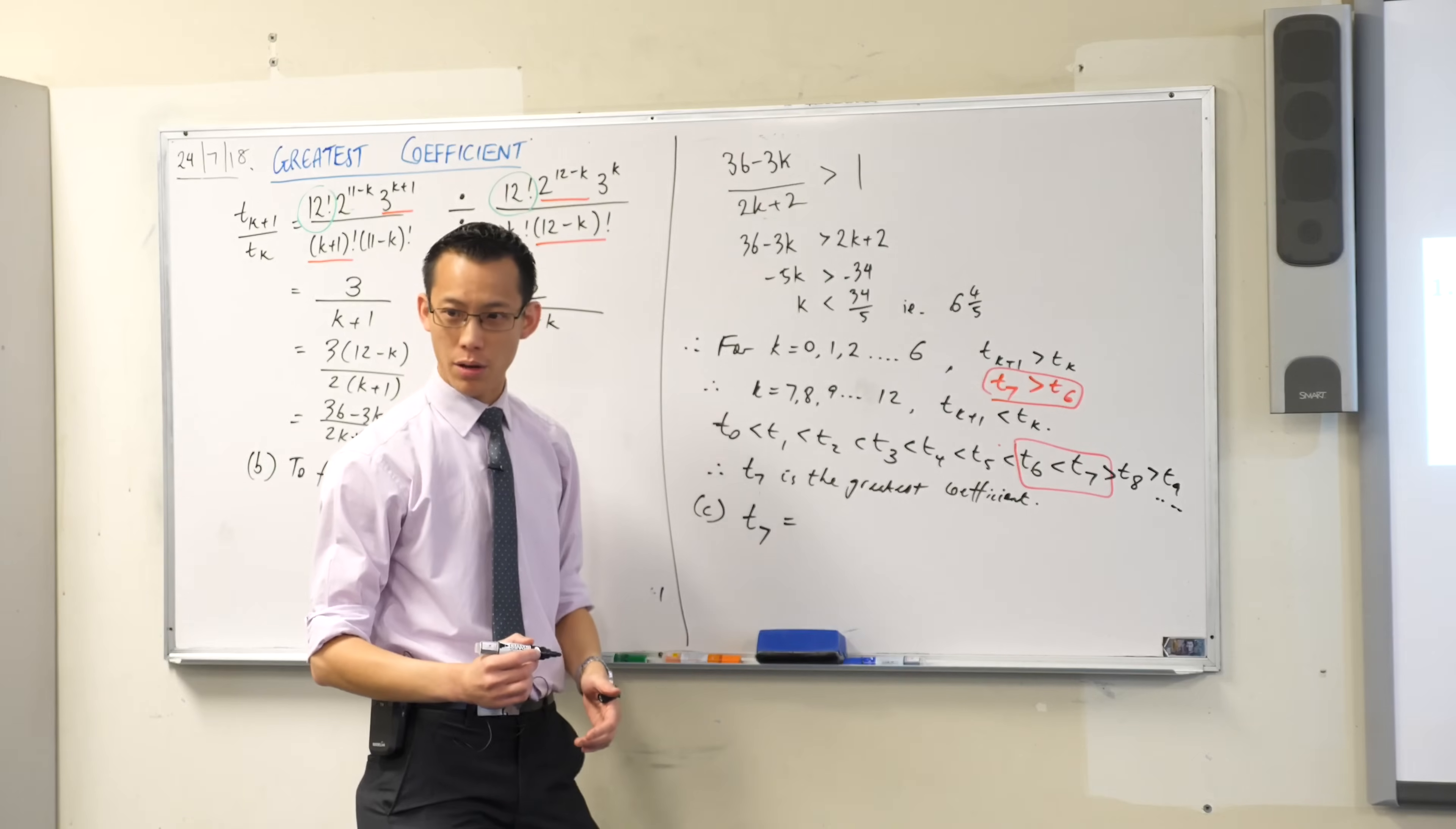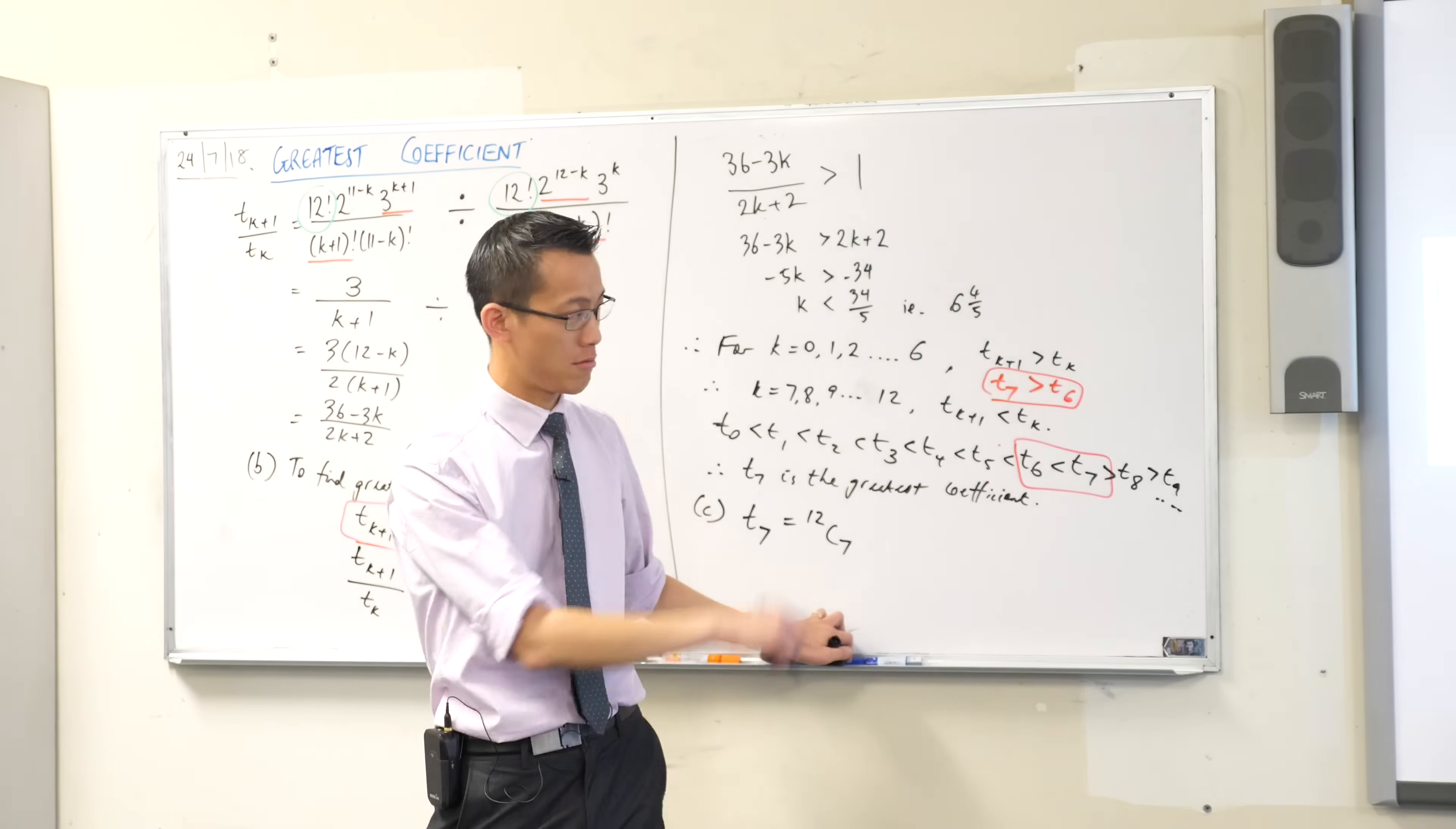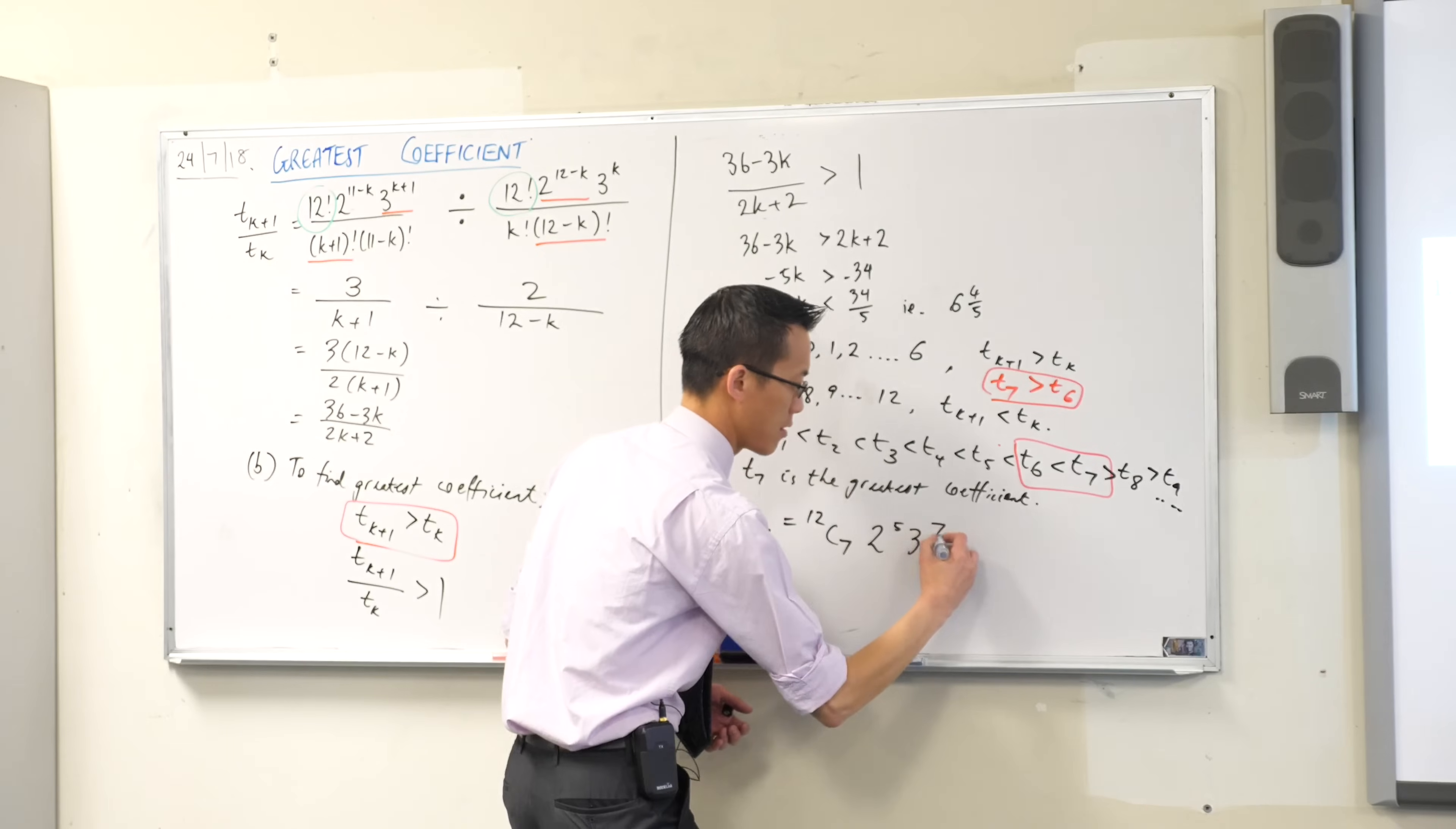So instead of 12 choose k, I'm going to write, what value of k am I currently interested in? Seven. So I'm going to write 12 choose 7. How many twos will there be in this case? Have a look. It's 2 to the power of 12 minus seven. So there'll be five of them. 2 to the power of 5. And then how many threes will be trailing on the end? Seven.